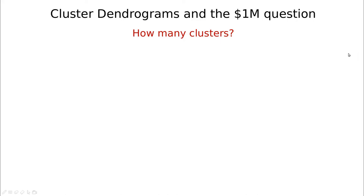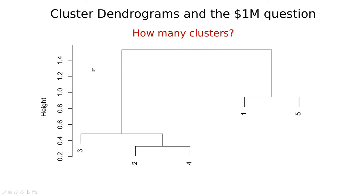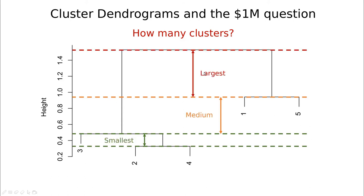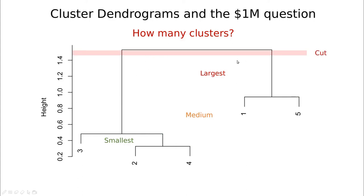Let's define the dendrogram more quantitatively. We first join singletons two and four, then join singleton three; the height represents the distance reduction when we incorporate another element into a cluster. I'm going to define the height as the distance between horizontal lines — short, medium, and large — and take the largest gap. The criterion is to cut at the largest distance, giving us the best partition.